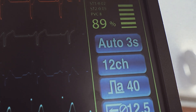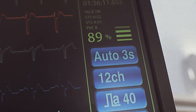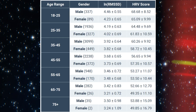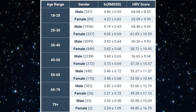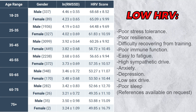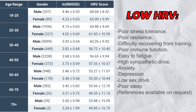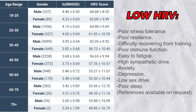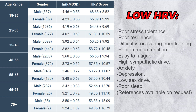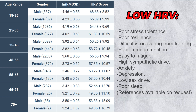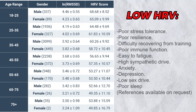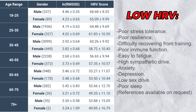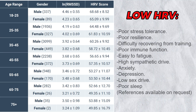Here are the signs and symptoms of low heart rate variability. The common symptoms include poor stress tolerance, poor resilience, difficulty recovering from training, and poor immune functioning. People with low HRV also fatigue more easily, have high sympathetic drive, and can show signs of anxiety, depression, low sex drive, and poor sleep.